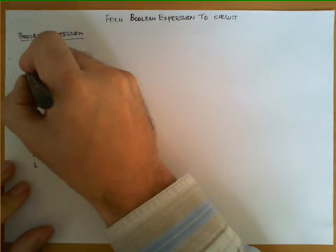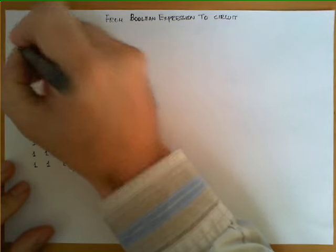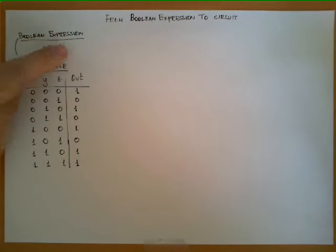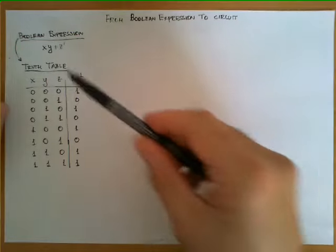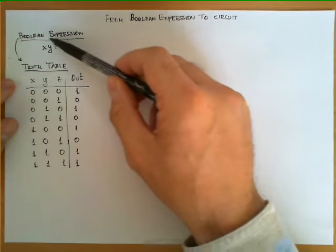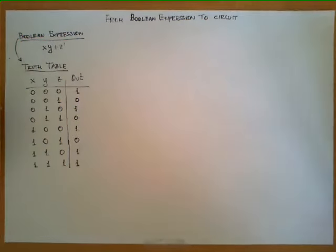From this Boolean expression we can immediately derive the truth table by exercising all possible eight combinations of the values of x, y, and z. For those values we obtain this column over here which is the output or the result of evaluating this Boolean expression.